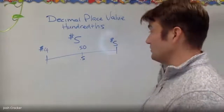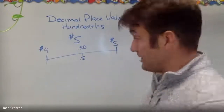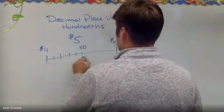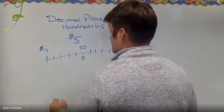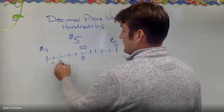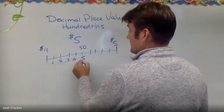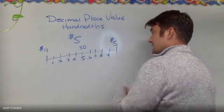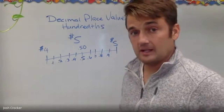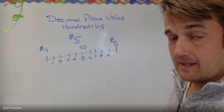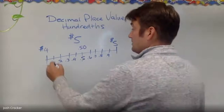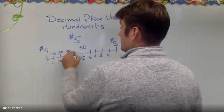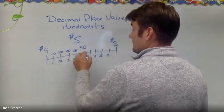And that's true at all the points — all the tens. So this is one tenth, two tenths, three tenths, four tenths, five tenths, six tenths, seven tenths, eight tenths, nine tenths. Ten tenths would be the whole next dollar. It can also be described as 10 hundredths, 20 hundredths, 30 hundredths, 40 hundredths, 50 hundredths.